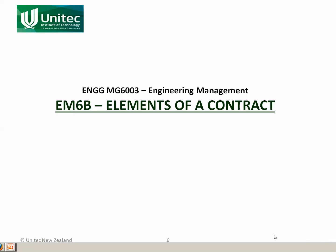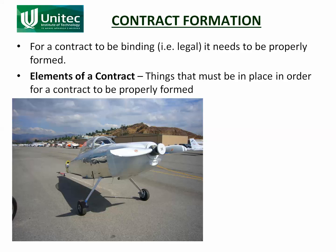In this slidecast we're going to look at the elements of a contract. The elements of a contract are the things that need to be present in order for a contract to be properly formed. In other words, what is it that makes a document a legally binding contract? What makes an agreement legally binding? That's what the elements of the contract are.